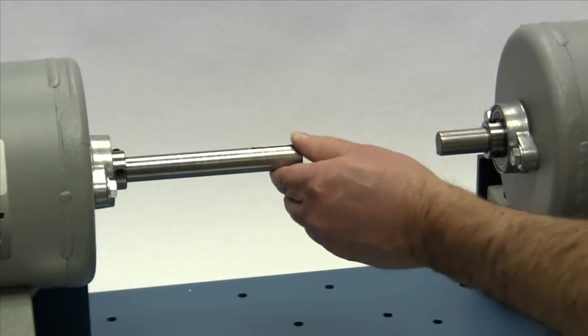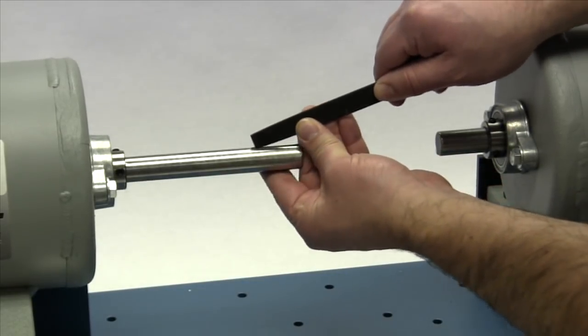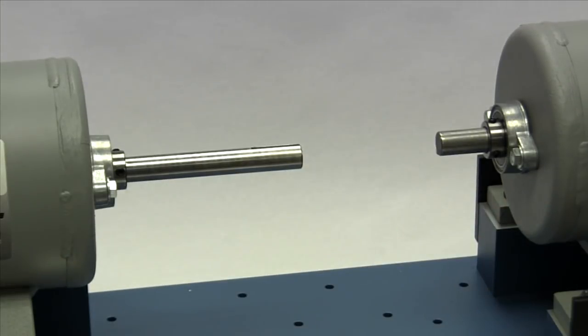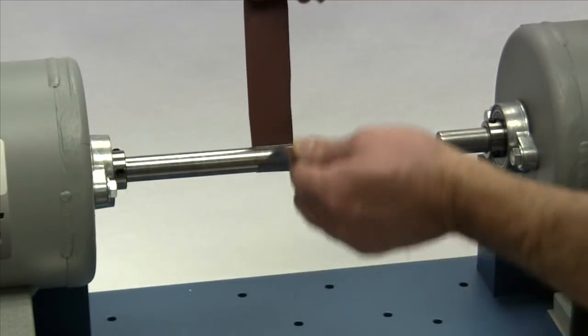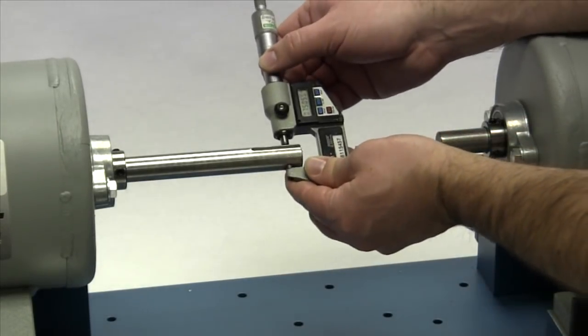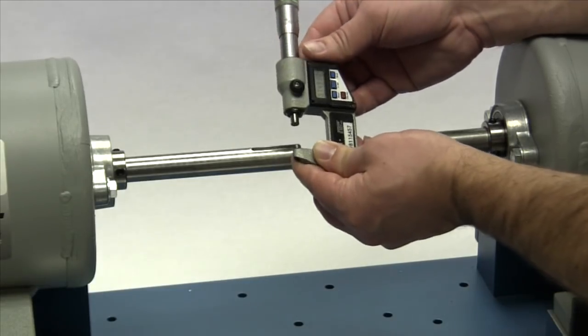It is important that you inspect the shaft and clean off any nicks or burrs from the keyway or shaft. A fine-toothed file can be used to clean burrs from the edge of the keyway or large dents in the shaft. The emery paper can be used to clear the shaft of any rust or fretting corrosion. This would be a good time to measure the shaft and ensure the shaft diameter matches the coupling bore size.